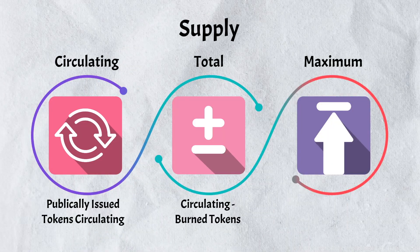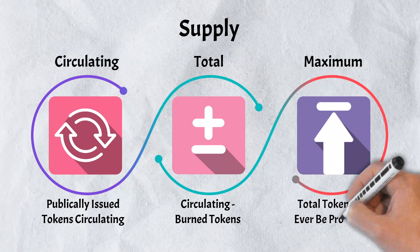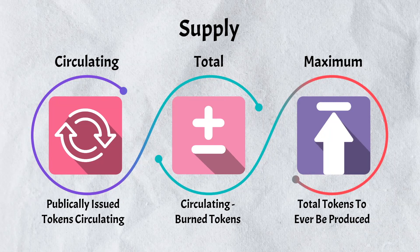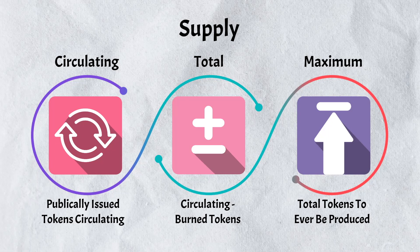And finally, maximum supply. Maximum supply refers to the total number of tokens that can ever be produced. While many cryptos such as Bitcoin and Cardano have a maximum supply, others, such as Ethereum, do not.